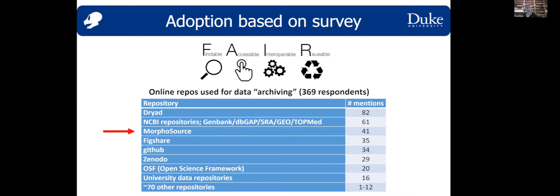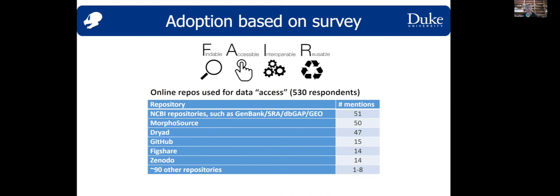I was pleased to see that Morphosaurus was the third most-mentioned repository for archiving. We also asked where respondents had accessed data that benefited them, and we see a slight shift where specialist repositories rank a bit higher. It makes sense for this natural history community that NCBI repositories and Morphosaurus are a bit higher there.